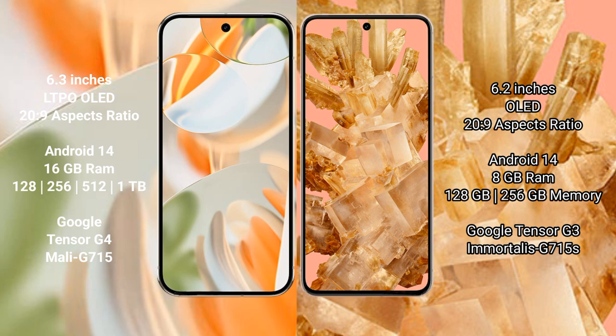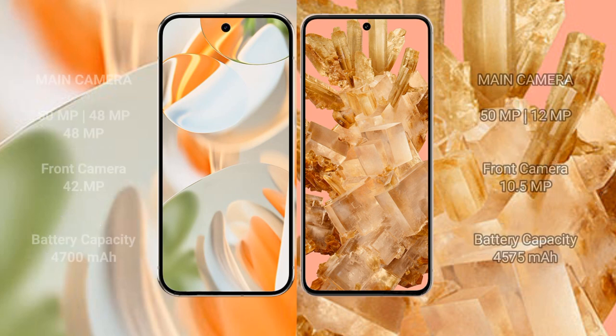The Pixel 9 Pro is powered by the Tensor G4 processor with Mali G715 GPU. The Asus ROG Phone 8 comes with 12 GB or 16 GB RAM, 256 GB or 512 GB internal storage, and is powered by the Snapdragon 8 Gen 3 processor.